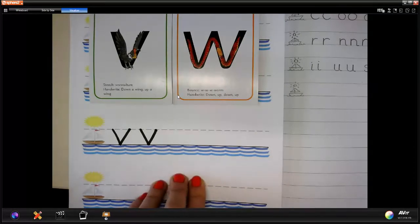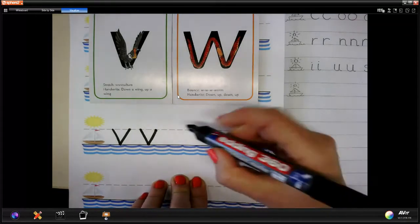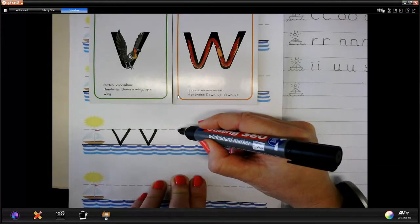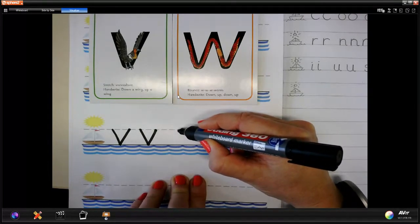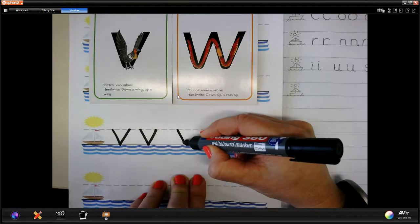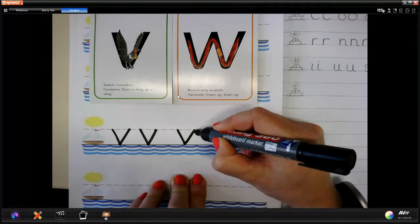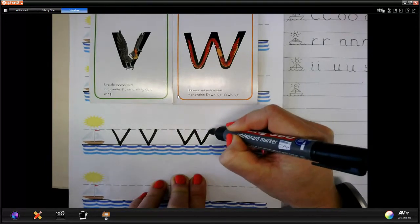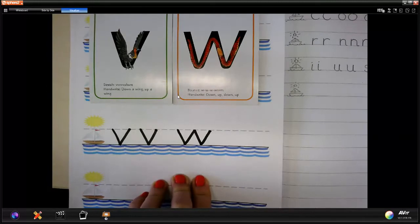So then we can use that practice to help us with our next letter, W. We've got our wiggly worm. This one, same height as the boat. We're going to go down, up, down, up. There's our wiggly worm.